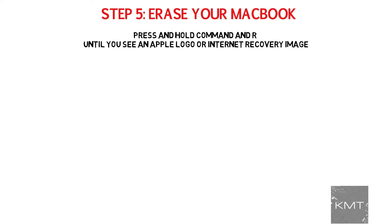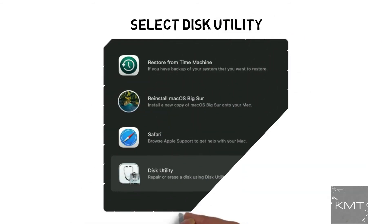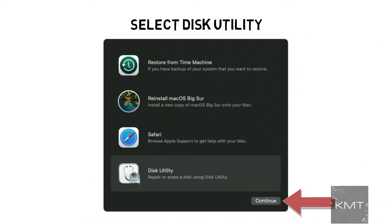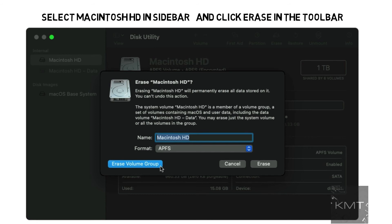Step number five: erase your MacBook. Turn on your Mac, then immediately press and hold Command and R until you see an Apple logo or internet recovery image, then you may let go of those keys. Now from the Utilities window in macOS Recovery, select Disk Utility and click Continue. Select Macintosh HD in the sidebar of Disk Utility and then click the Erase button in the toolbar. Then enter the requested details. You can leave the default name of the drive as Macintosh HD and continue to use APFS or Mac OS Extended as recommended by Disk Utility. Now go ahead and hit Erase.